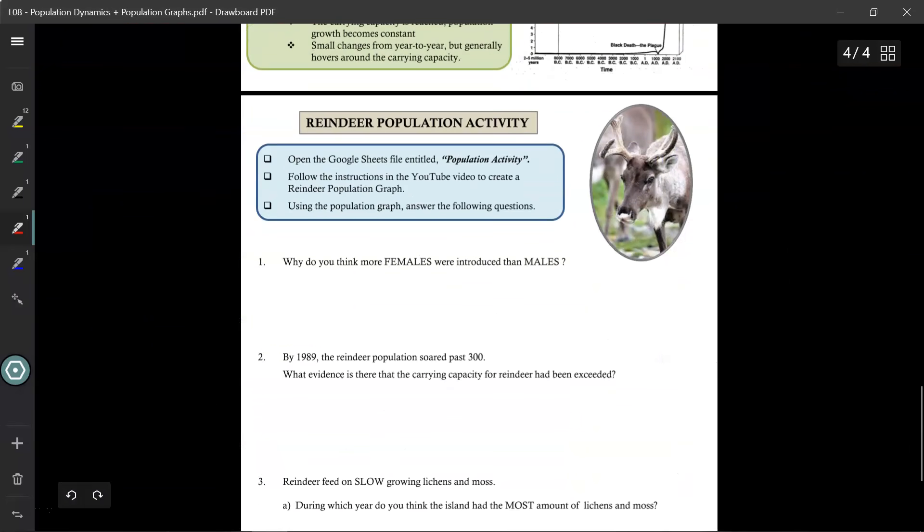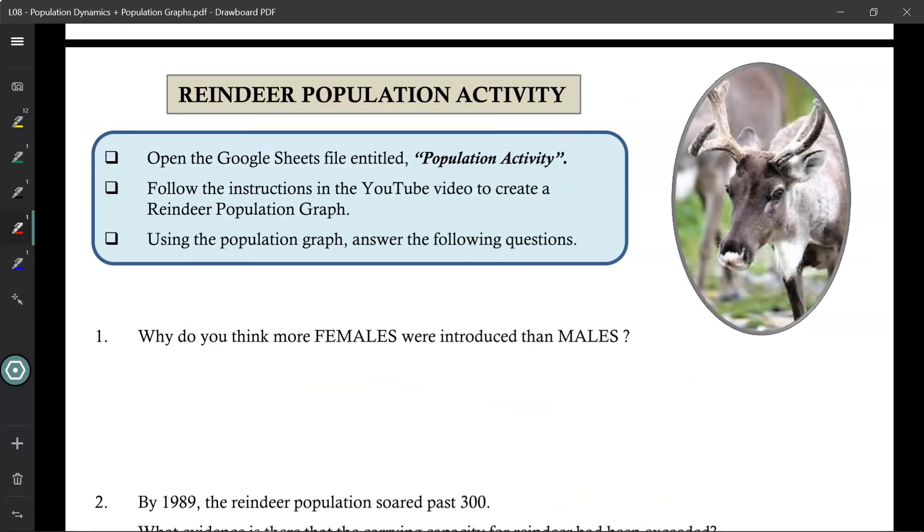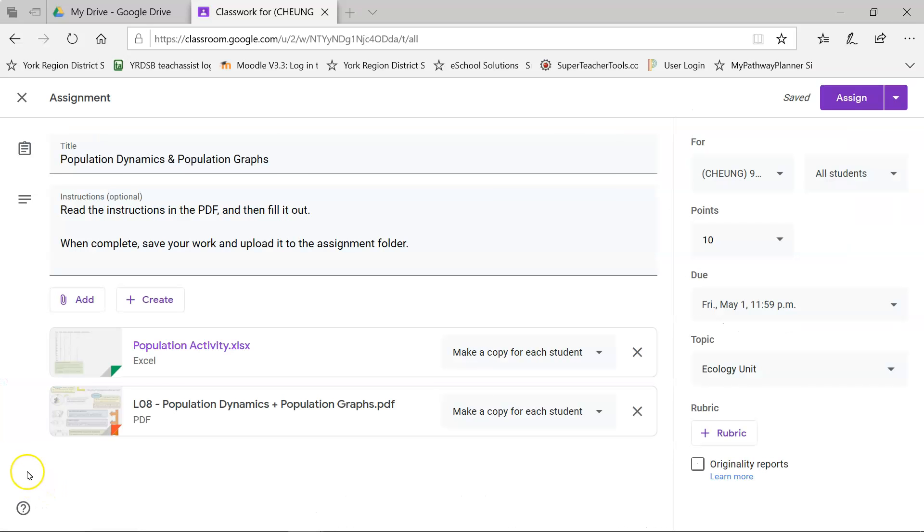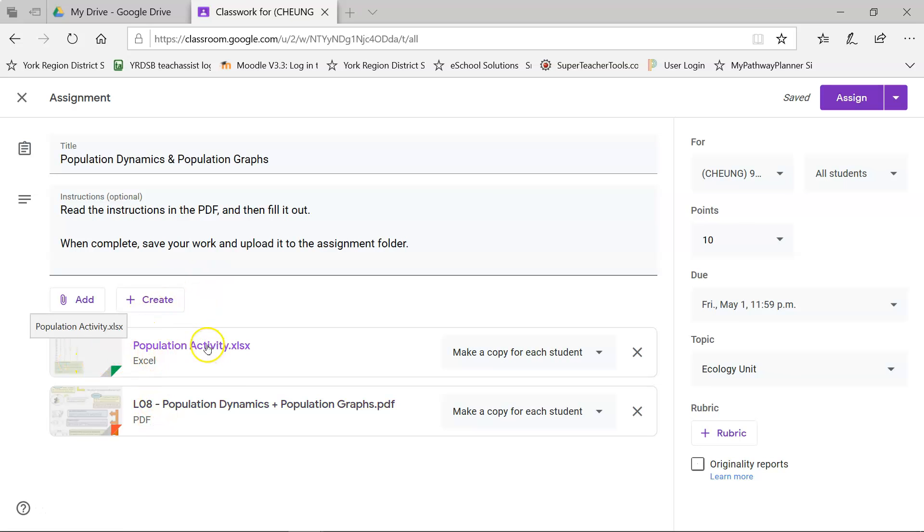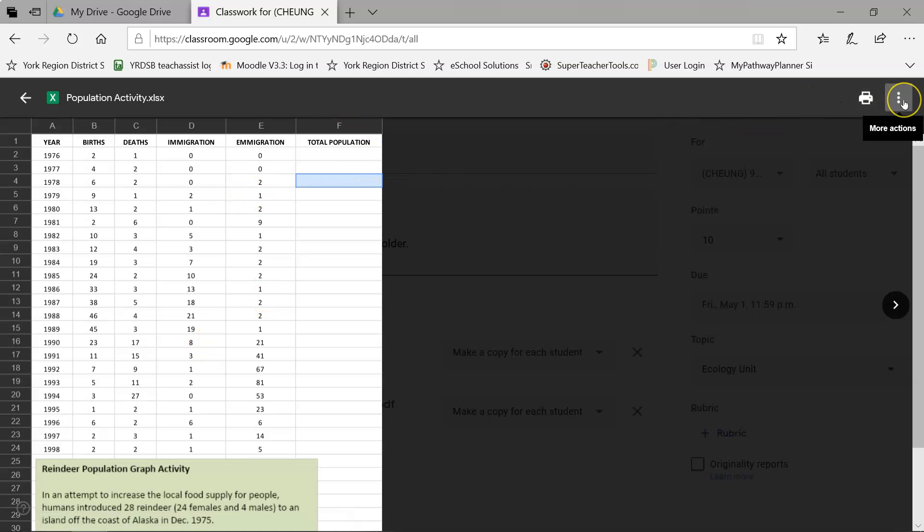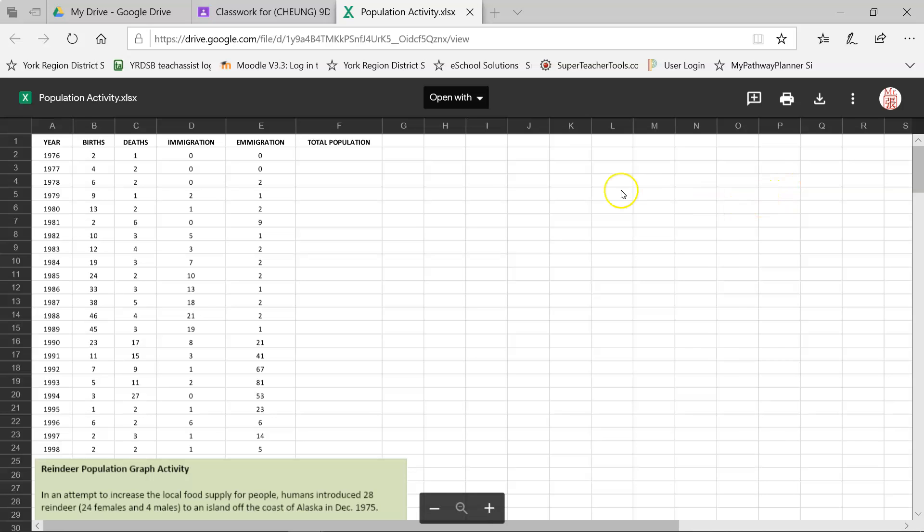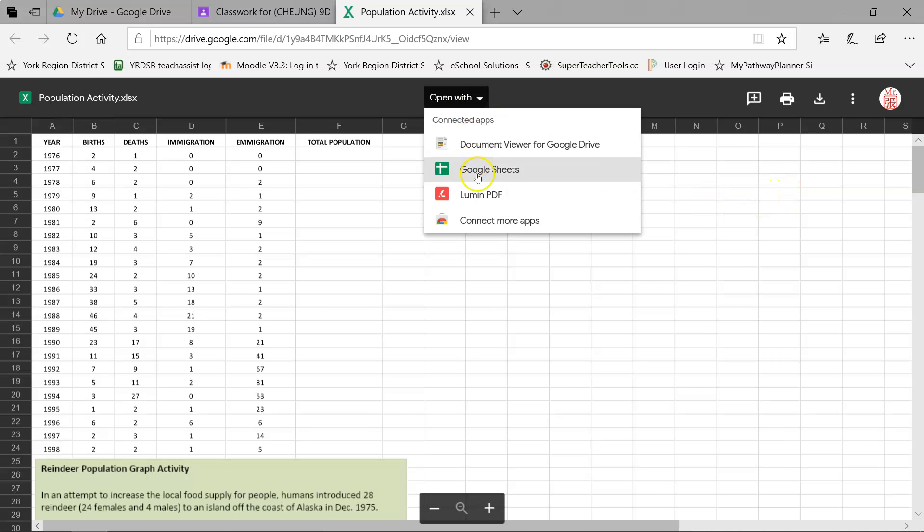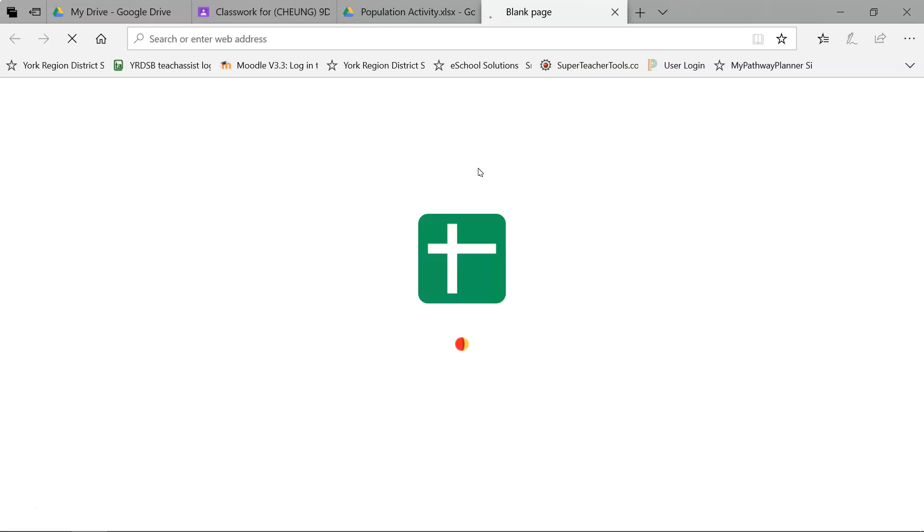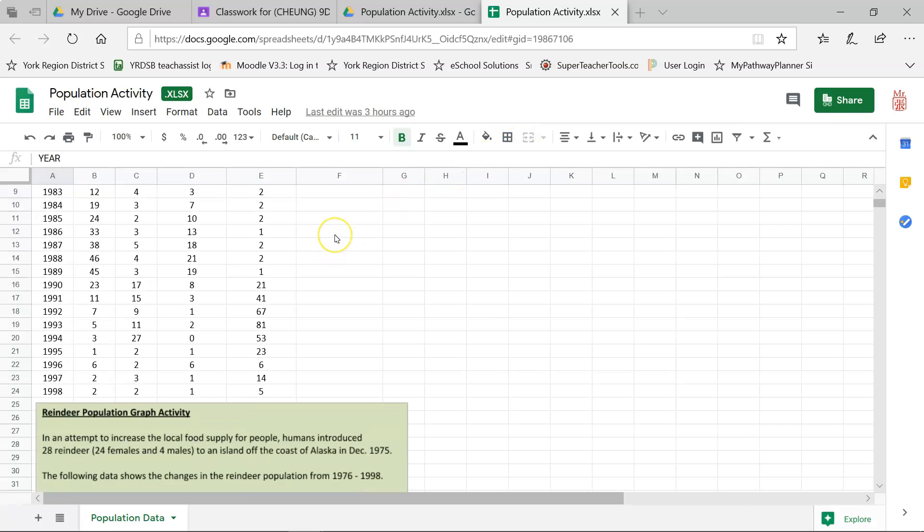Alright, so the next topic we're going to look at is the reindeer population activity. For this, you'll need to go back to your Google Classroom and inside your assignment page, click on the population activity Excel spreadsheet file. You'll notice there's nothing you can do over here. So click on the three dots in the top right hand corner and click on open a new window. And this will give you the option to open with and choose Google Sheets. Once the file is loaded, let's read the instructions.